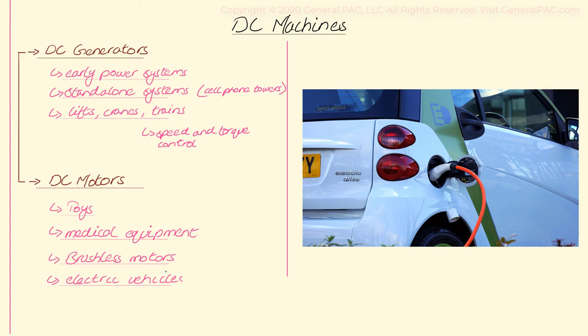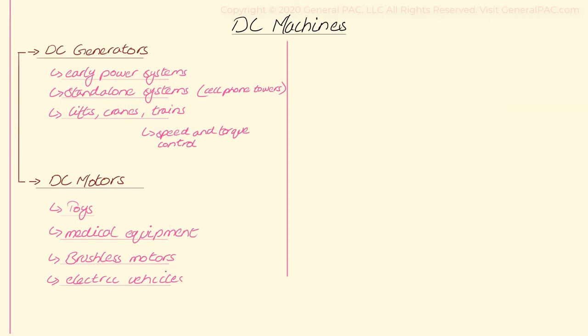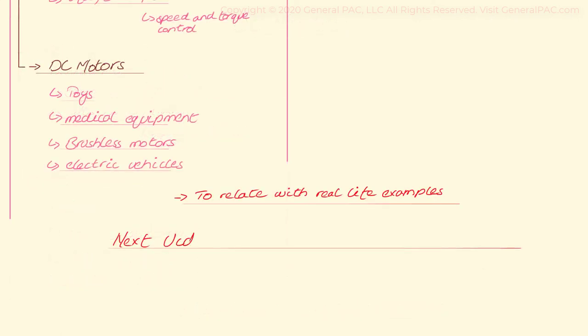So far we have shared a lot of applications of electric machines and we hope this video has served its purpose. The idea to discuss the applications of machines before getting on to how they operate is necessary so that we may relate what we are studying to real-life examples. Electric machines are an essential part of our world, and most importantly electric motors are used everywhere around us. In our next video we will be discussing AC machines in detail, including the operation and working of AC motors and generators.